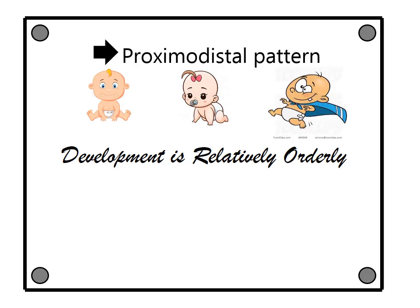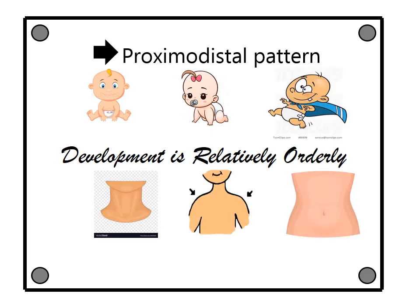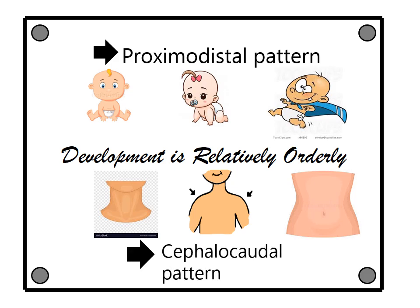During infancy, the greatest growth always occurs at the top — the head — with physical growth in size, weight, and feature differentiation gradually working its way down from top to bottom, for example, neck, shoulders, middle trunk, and so on. This is the cephalocaudal pattern. By understanding how characteristics develop, we can make relatively accurate and useful predictions about learners and design effective instructional strategies based on our knowledge of development.